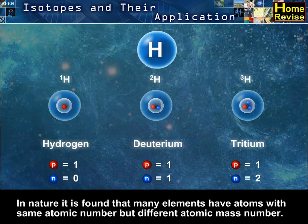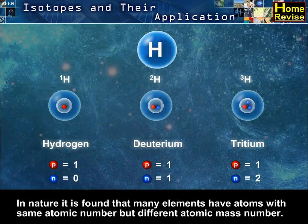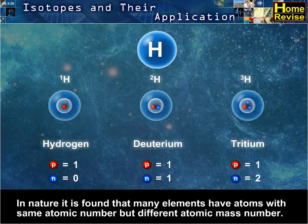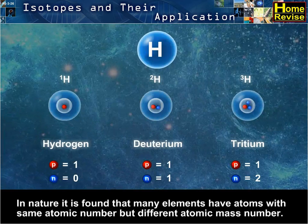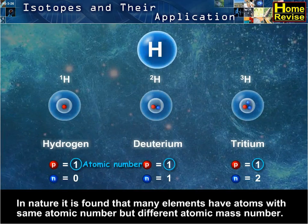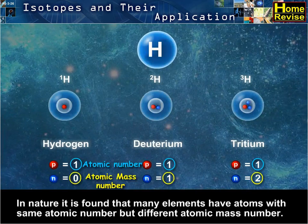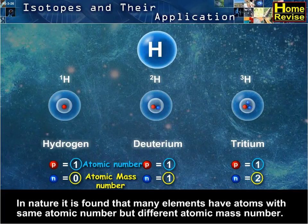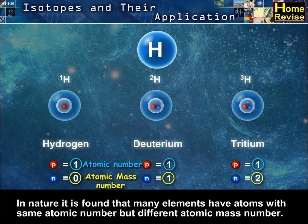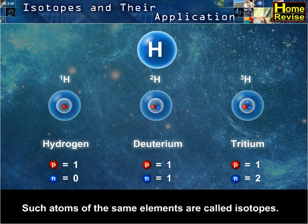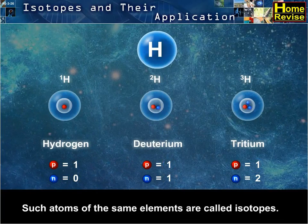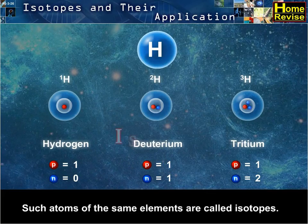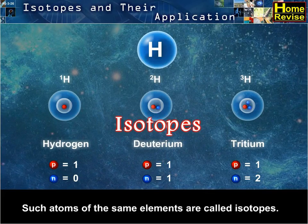In nature, it is found that many elements have atoms with the same atomic number but different atomic mass number. Such atoms of the same elements are called isotopes.